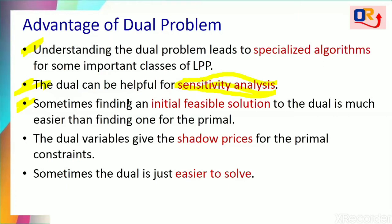We will understand this better when studying the dual simplex method. The fourth advantage is that the dual variables give the shadow prices to the primal constraints. Shadow prices mean: given that the RHS values represent total resources available, if you increase the total resources by one unit, how much gain can we see in our profit? That analysis — how much profit increases or decreases by changing a resource by one unit — is called shadow prices.